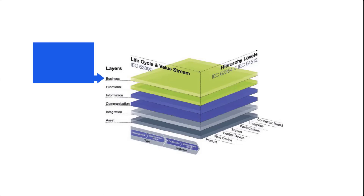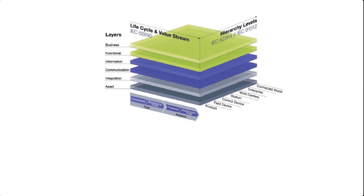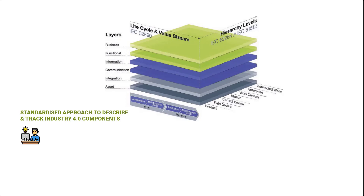Lastly, a business layer needs to be defined for each component — what manufacturing business processes is it linked to, and what legal and regulatory conditions does it operate under? Moving on to the life cycle and value streams axis, this dimension represents the life cycle of Industry 4.0 components. A component could be anything that needs to be represented in the production process, from a product to an entire factory. The idea is to come up with a standardized approach to describe and track a component over its entire lifetime, from conceptualization to its usage, maintenance, and decommissioning.